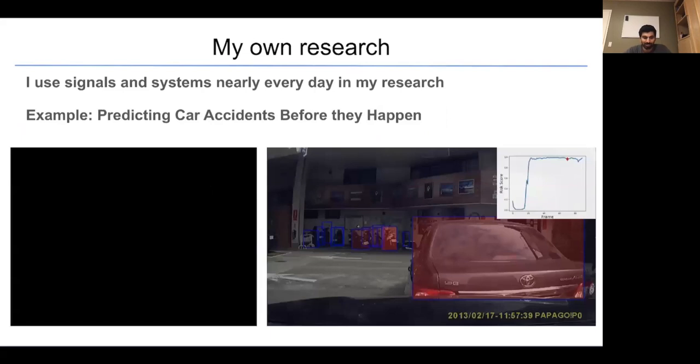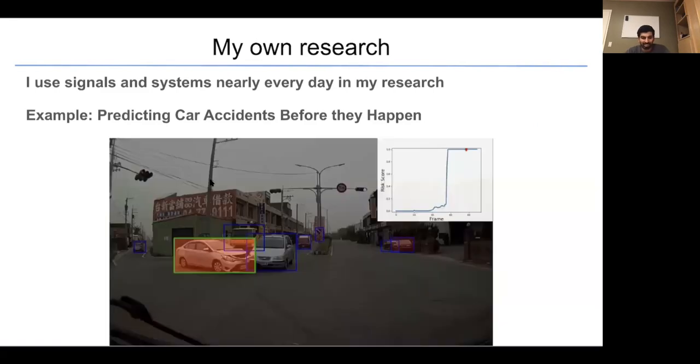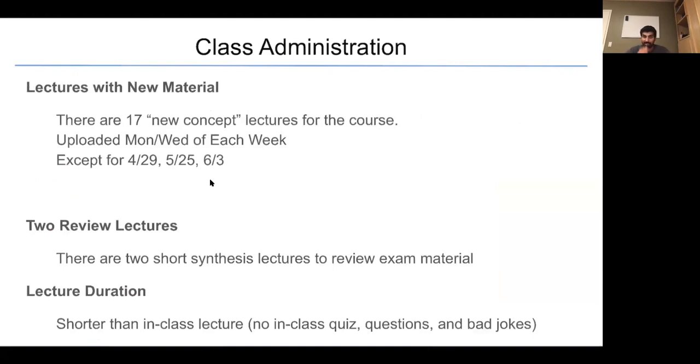The last example of my own research that uses signals and systems is predicting car accidents before they happen. Once again, these are videos. What they're showing in this video is a car that is backing into another car, an accident happening. And what we are doing is we're actually analyzing the image. The image is a signal and then we have a system that analyzes this signal to actually output a risk score for when an accident can happen. Based on this analysis, we can actually predict about three seconds in advance, three seconds before an accident happens.